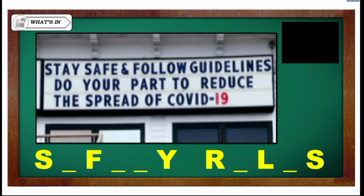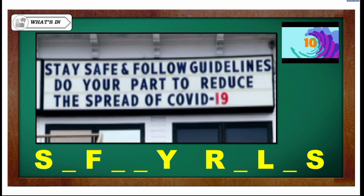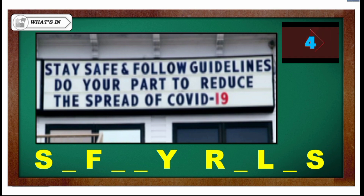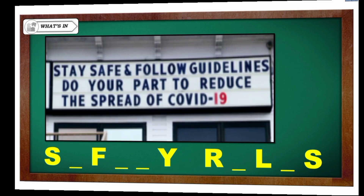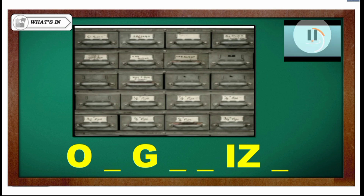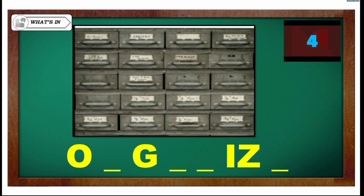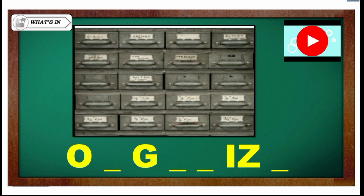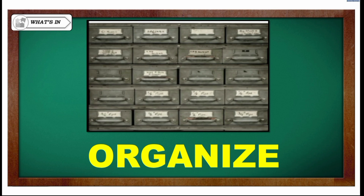For the second one, the given letters are F, S, F, Y, R, L, and S. The correct answer is 'safety rules.' I hope you got the correct answer. And for the third and last, the given letters are O, G, I, and Z. Can you guess the missing letters? The correct answer is 'organize.' I hope you got all the correct answers for the three photos that I showed.